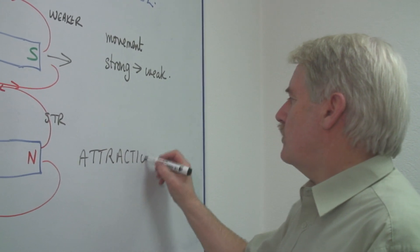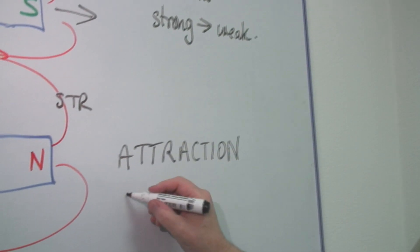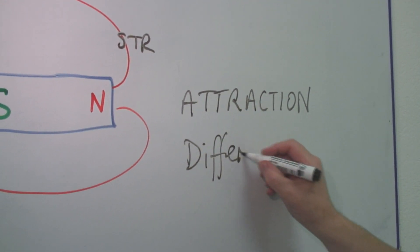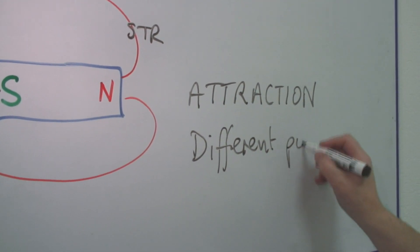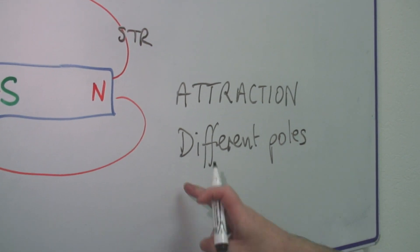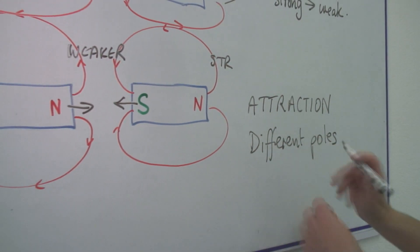And we get attraction if we have got different poles together. If we've got different poles, north and south, they will always attract.